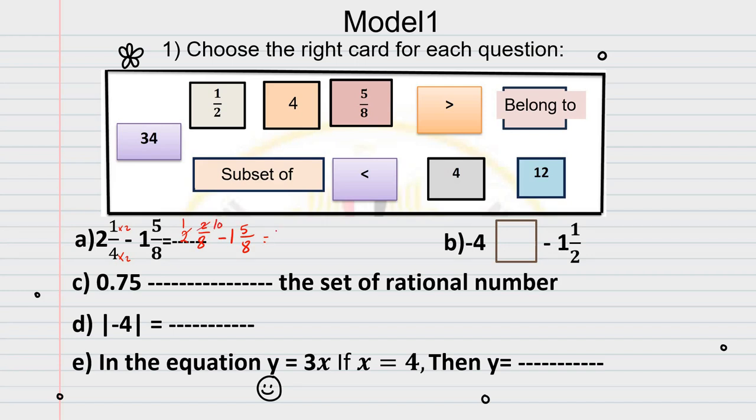So my new problem will be 1 and 10 over 8 minus 1 and 5 over 8. 1 minus 1 equals 0, and 10 minus 5 equals 5 over 8. So the answer of this question is 5 over 8. What about number B? Number B here is negative 4 and negative 1 and 1 half.